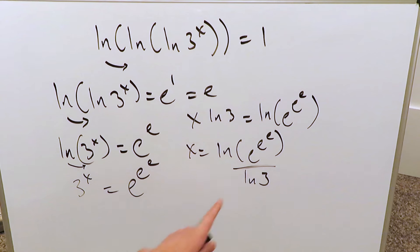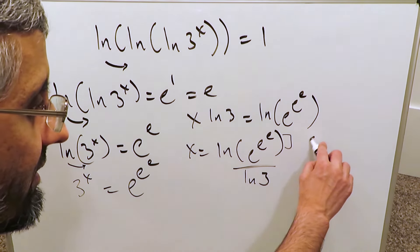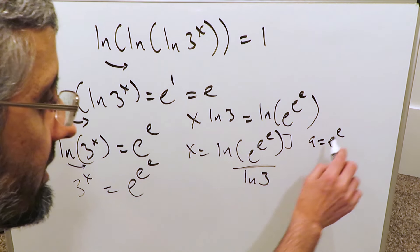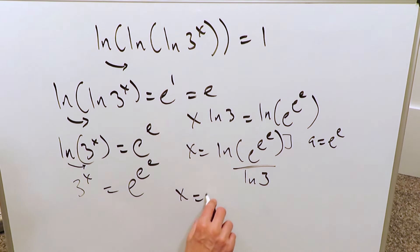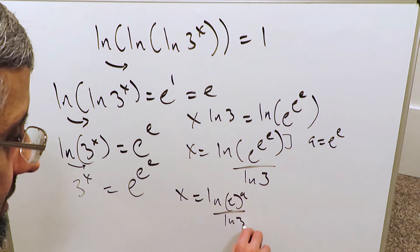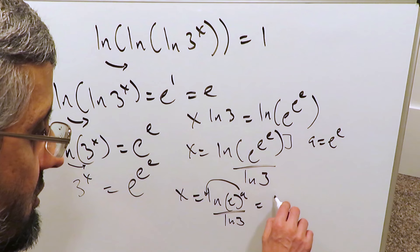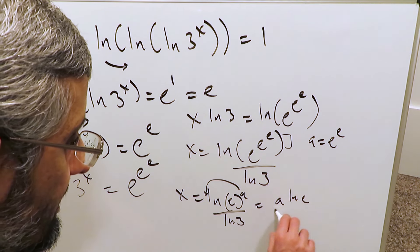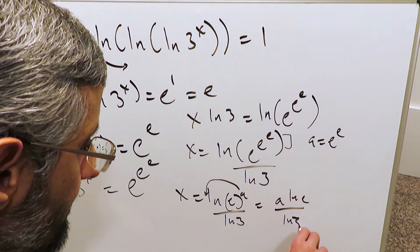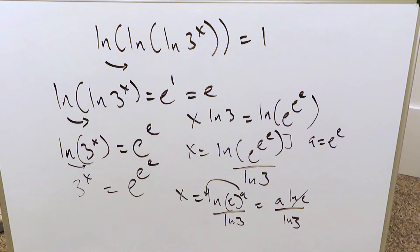This item over here, the numerator expression can be simplified. If you focus here on the exponents, let's say a is equal to e exponent e. What we are seeing now, x is equal to natural log e exponent a divided by natural log 3. You can push this a over here, and you would be saying you have a natural log e divided by natural log 3. Natural log e is equal to 1.